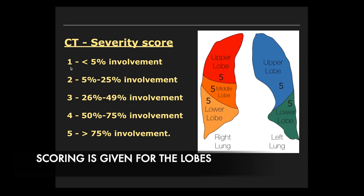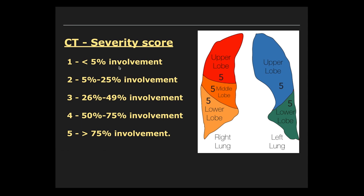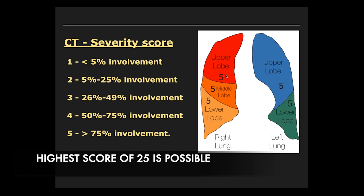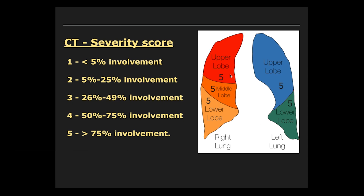In the lobe-based method, a score of 1 is given if less than 5% of each lobe is involved. A score of 2 is given to each lobe when there is 5 to 25% involvement. A maximum score of 5 per lobe is given when there is more than 75% involvement of the lung parenchyma in that lobe. So a maximum total score of 25 is possible in this method.